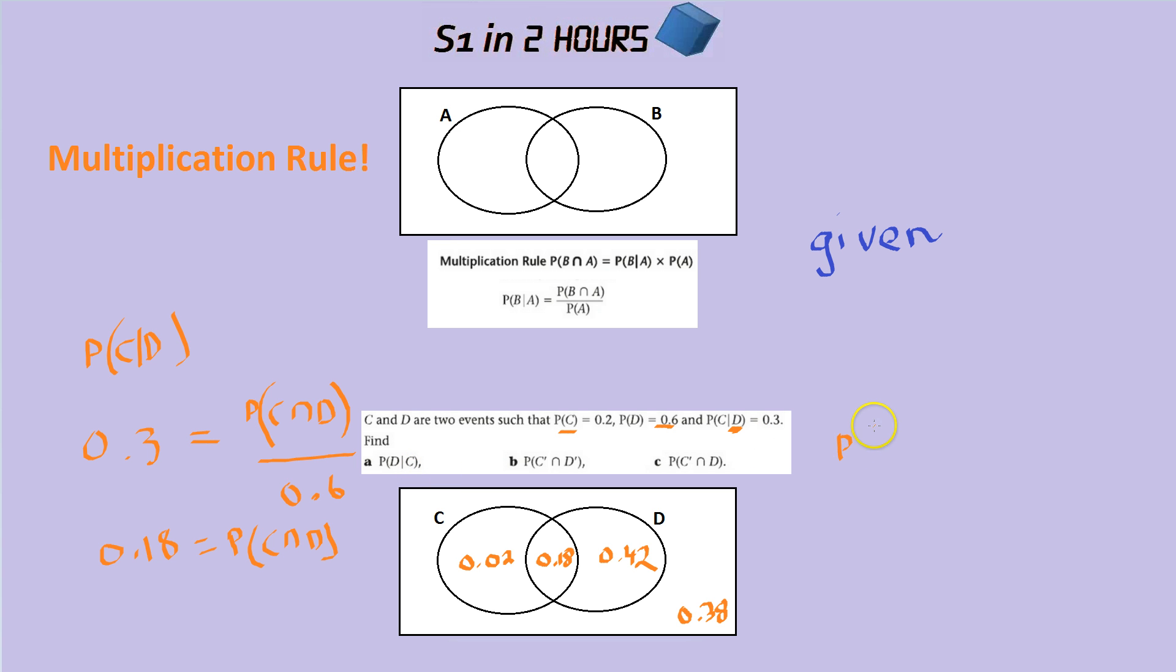Divided by which one? It's going to be divided by the second letter. Always remember, it's divided by the second letter. So that's going to be divided by the probability of C.